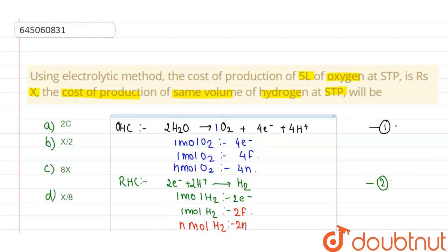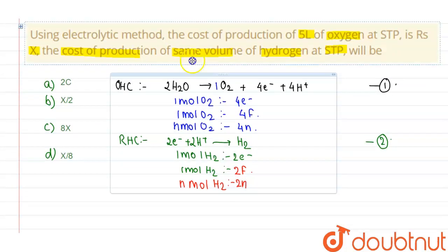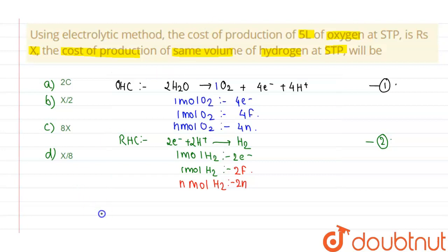So in the question it is written that the cost of production of oxygen is rupees X and the most important line is the cost of production of same volume of hydrogen. So same volume means same number of moles.